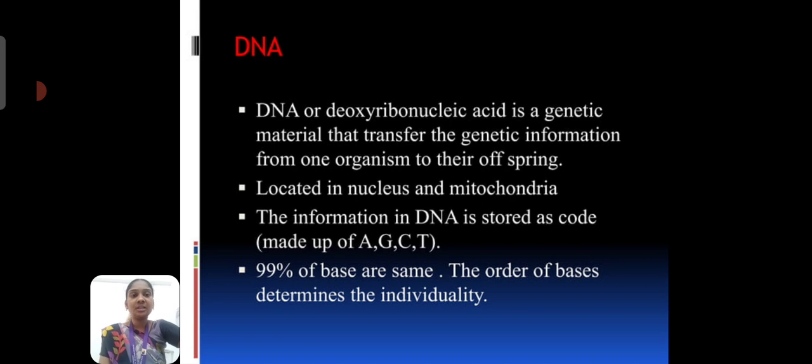What is DNA? DNA is deoxyribonucleic acid. It is the genetic material that transfers the genetic information from one organism to another organism. They are located in nucleus and mitochondria. The DNA having information, it is stored as code. The codes are adenine, guanine, cytosine and thymine.